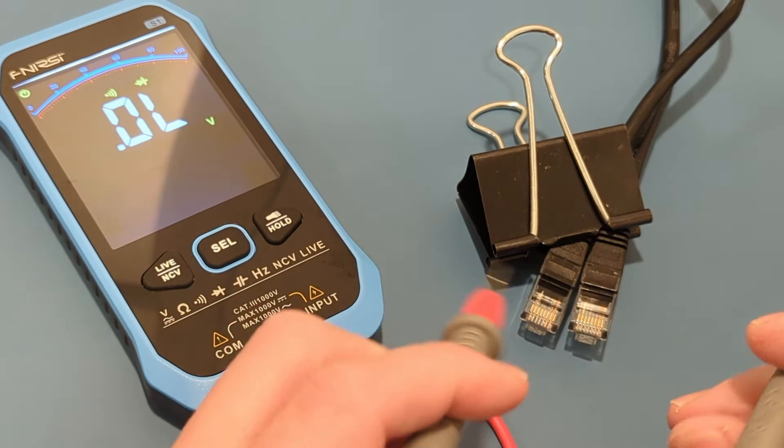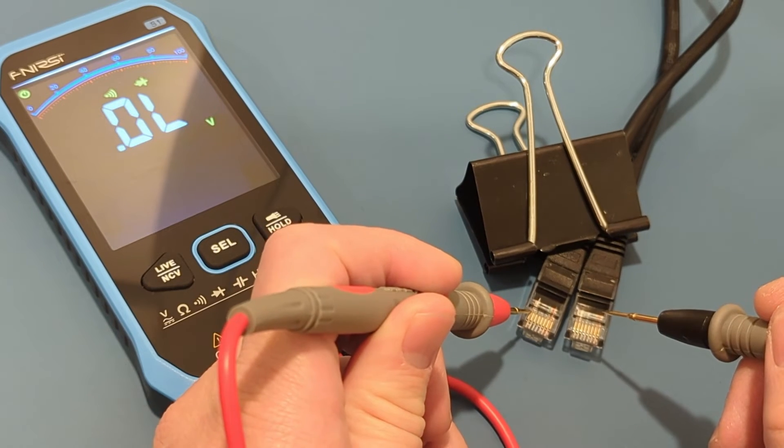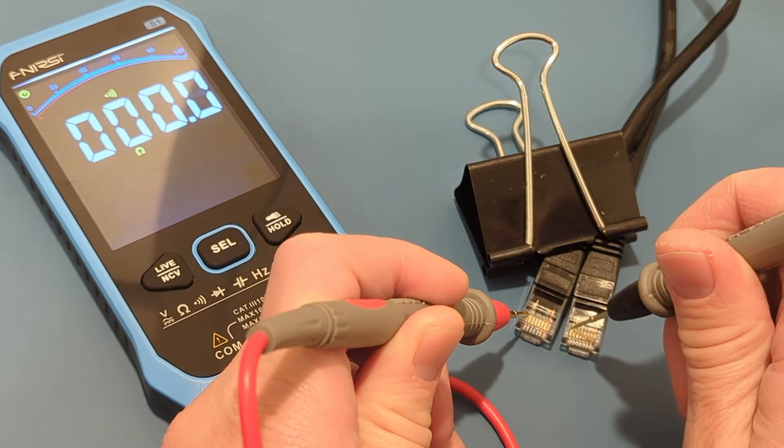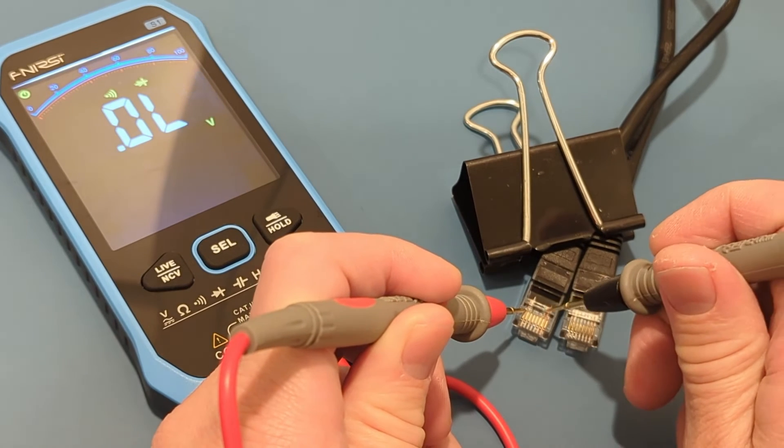Touch the left-most pin on the first RJ-45 connector with the left probe lead. Touch the left-most pin on the second RJ-45 connector with the right probe lead. You should hear a beep if there is continuity.